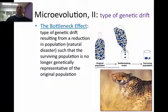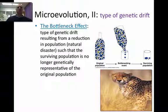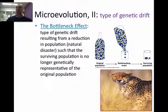Another example of genetic drift is called the bottleneck effect. The bottleneck effect is caused when, for some reason, you have a reduction in the population — maybe through a natural disaster, a hurricane, a flood, a fire — in which the survivors are not a true representation of the entire population as a whole. That's the bottleneck effect.